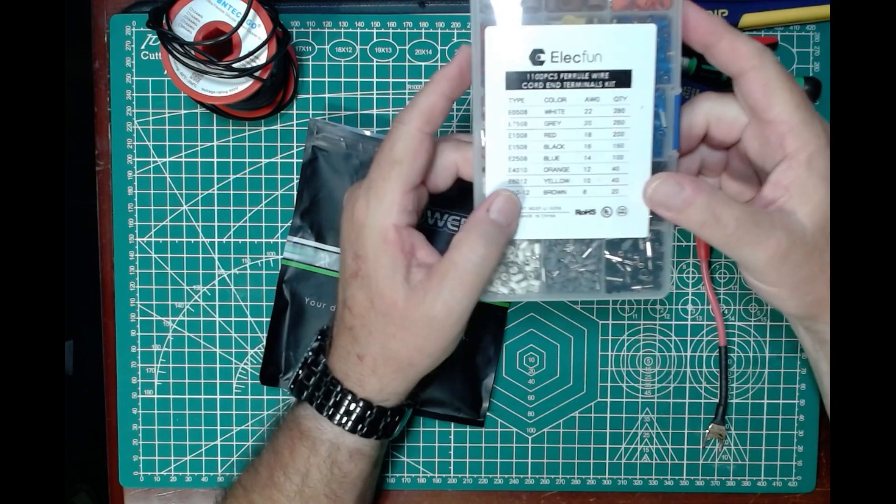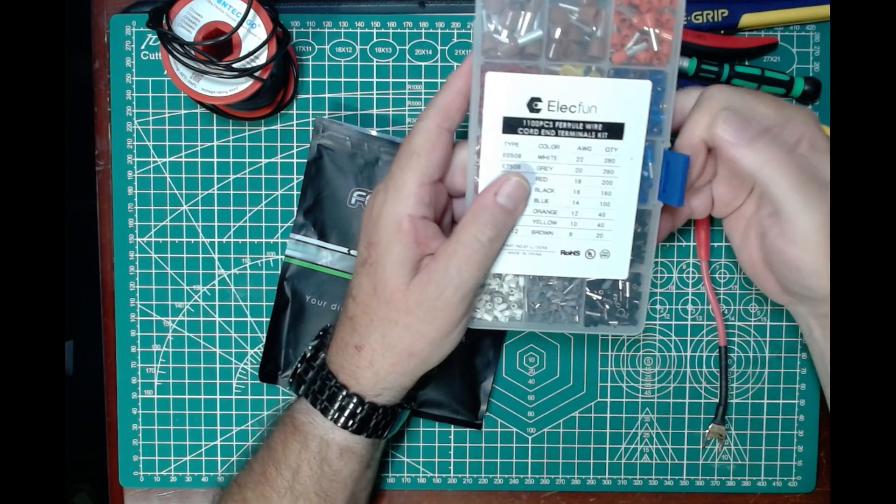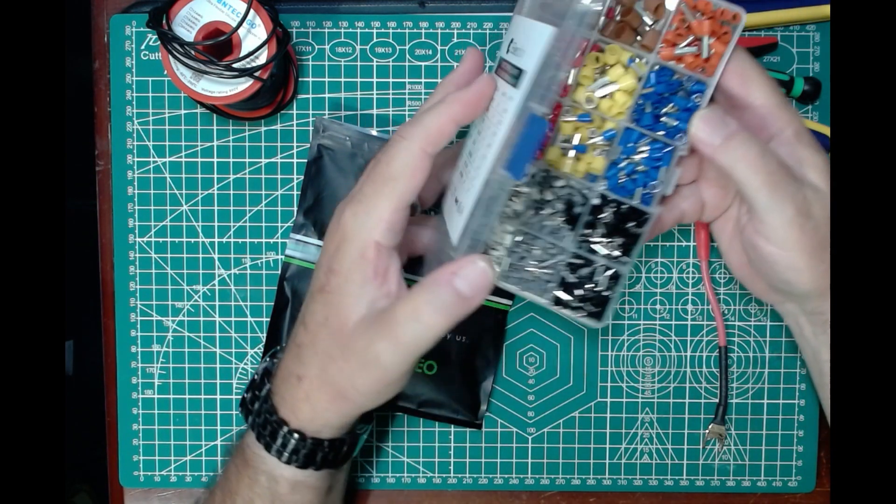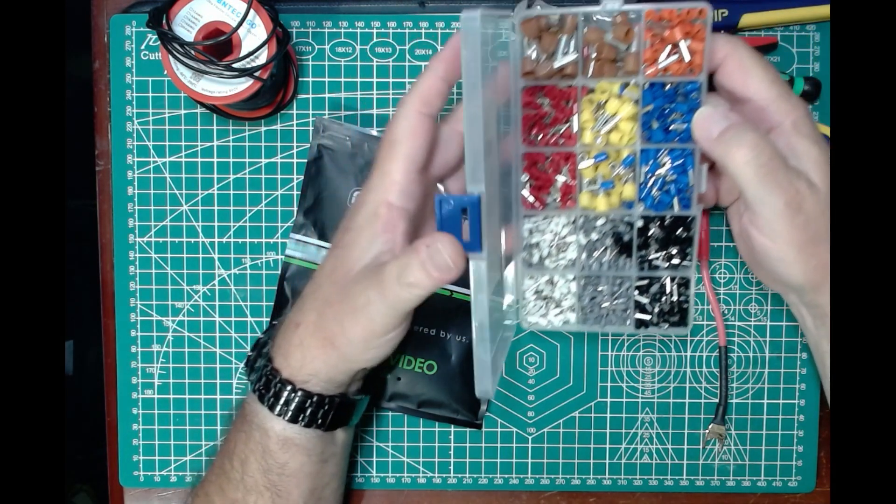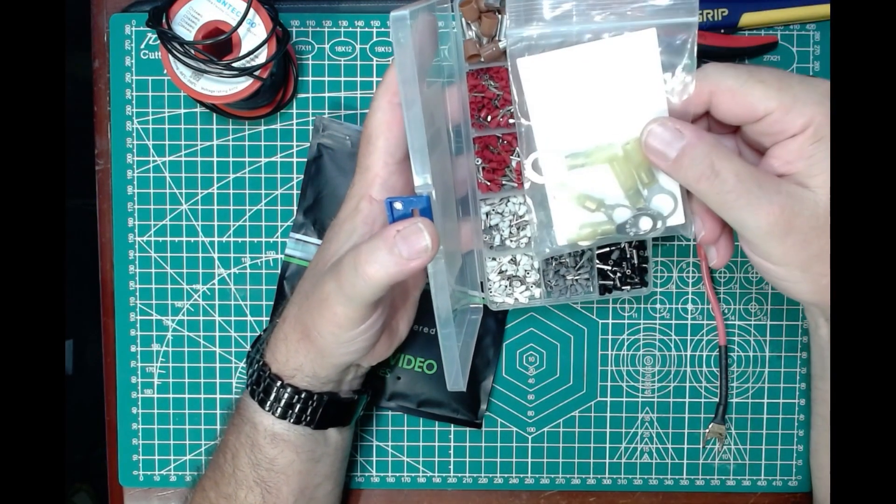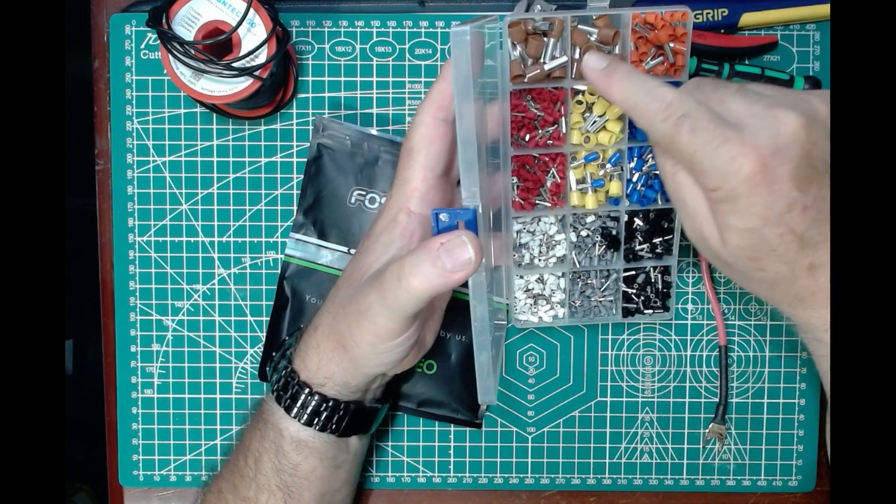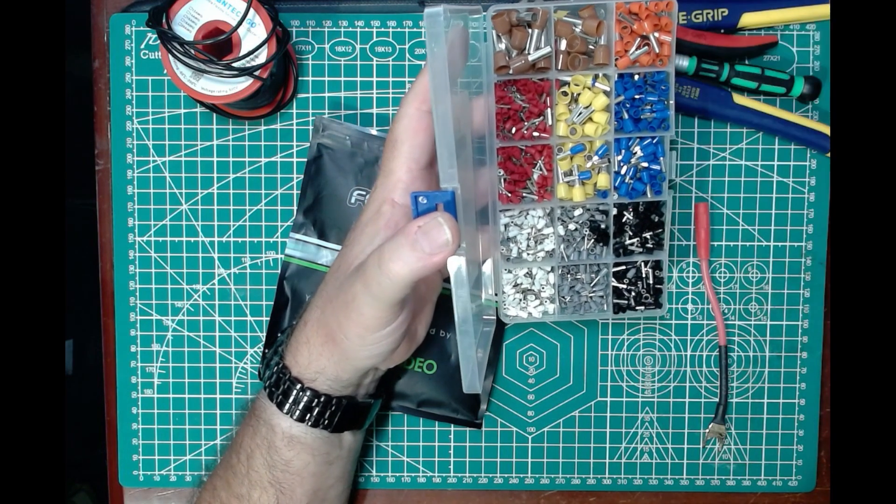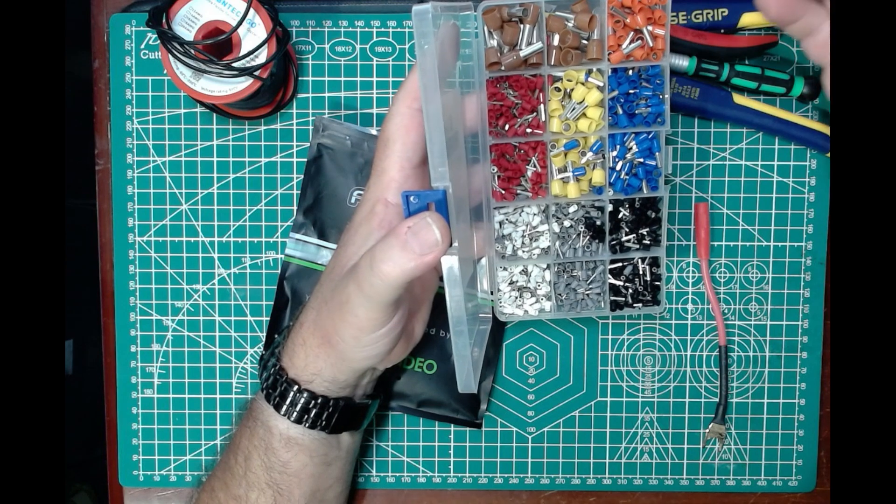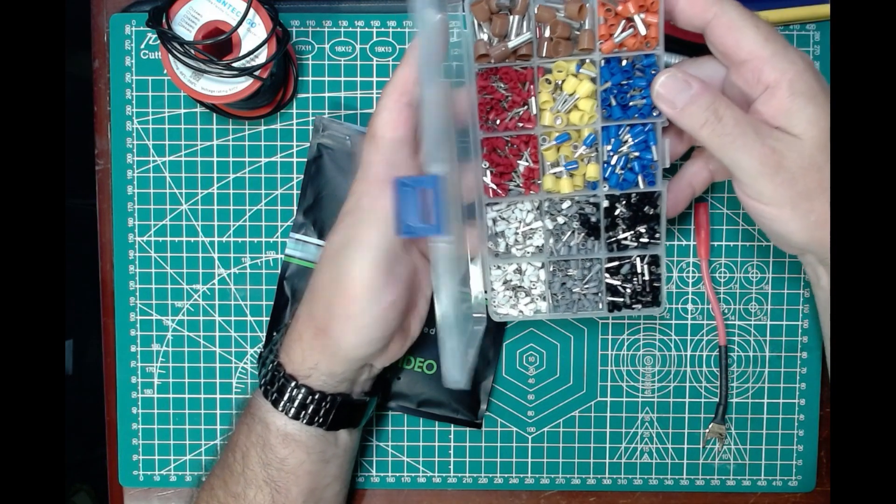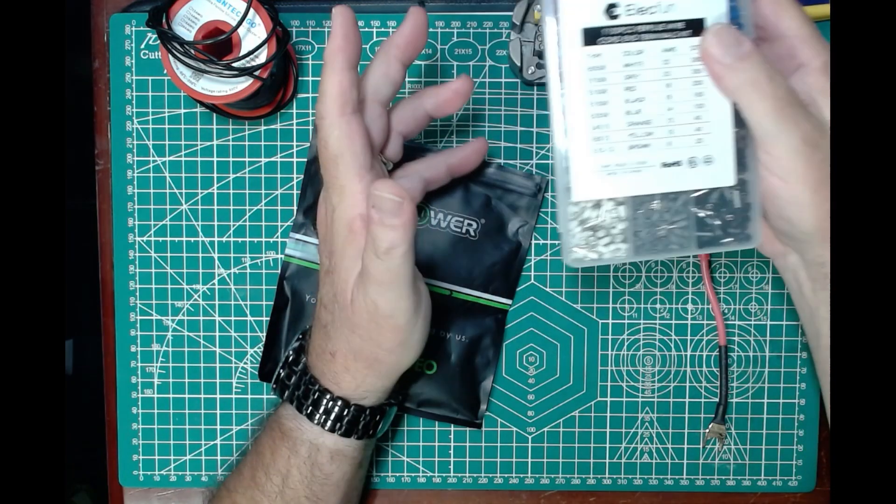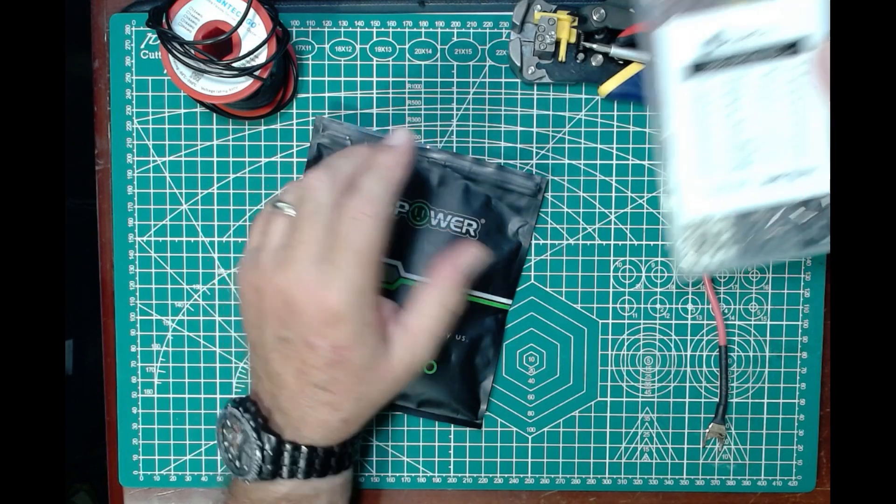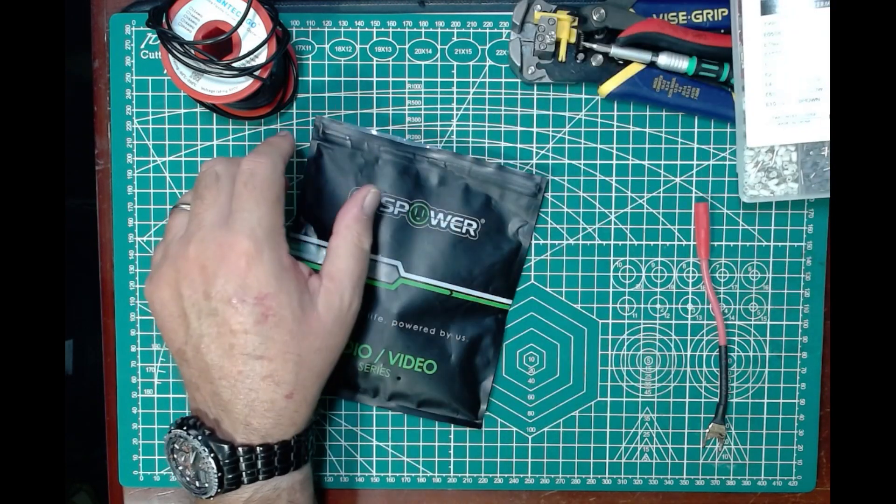Then we have ferrules. Now ferrules could work if you have a terminal that you're going to stick them into. Similar to something like this. So you could twist all your wires up in a ferrule and then do a crimp on it and then stick this in the ring terminal or in some other kind of terminal and that would possibly work as well. Possibly. I don't know. It seems like it's an extra step that doesn't do anything for me.